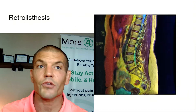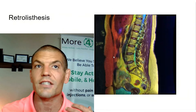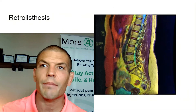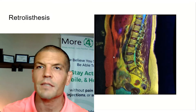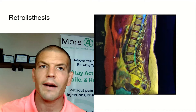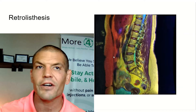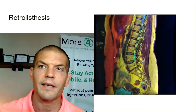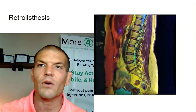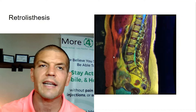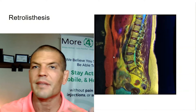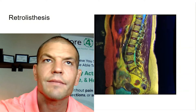Retrolisthesis is just the opposite of spondylolisthesis. You can see this at the bottom of this picture where L5 has started to slip backwards on S1. Again, don't get too worried if you have these findings on your MRI, because they're fairly common.